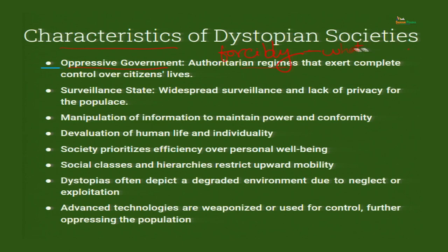Oppressive government means authoritarian regimes that exert complete control over citizens' lives. Next: surveillance state. Surveillance means somebody is watching you all the time. You are going to a bank — there is a CCTV. Going to school — there is a CCTV in the school and even in the school bus. You are in your home — there is a CCTV. The only places there are no CCTVs are the toilets and washrooms — till now.